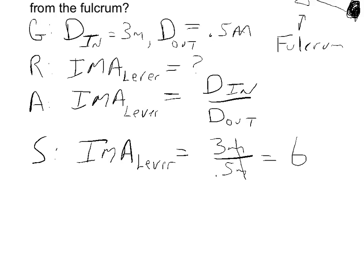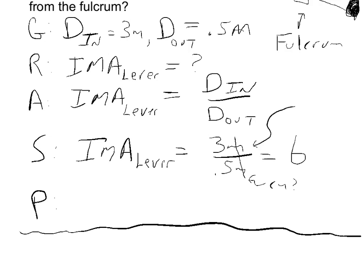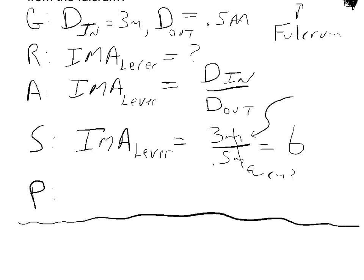There are no units for any ratio when both values share the same units. The only tricky part of these problems: watch out — I might give you one distance in meters and another in centimeters, so make sure they're both in the same units. The ideal mechanical advantage of the lever is 6.